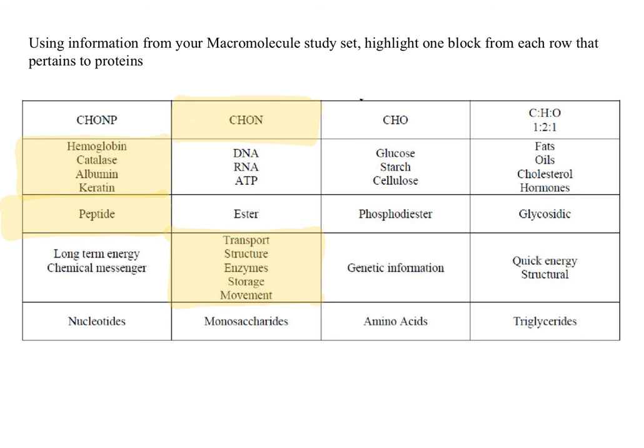Your last row, you are going to highlight or circle the monomer that makes up proteins. The box that you should have highlighted in this row is amino acids. Proteins are made up of amino acids.